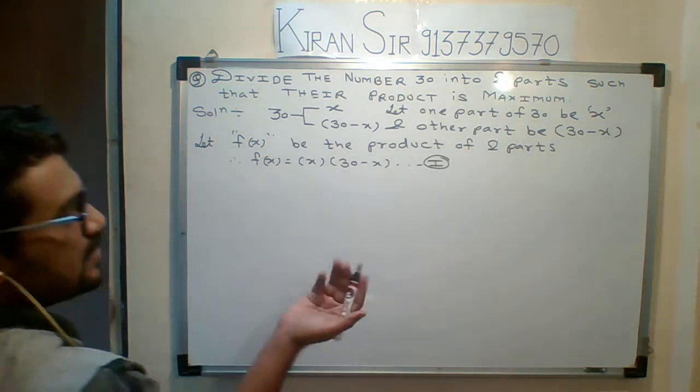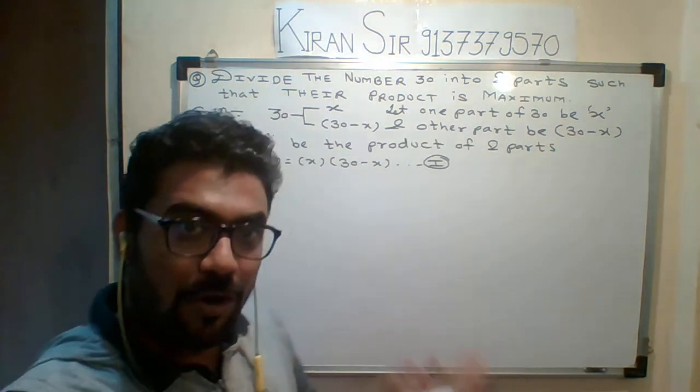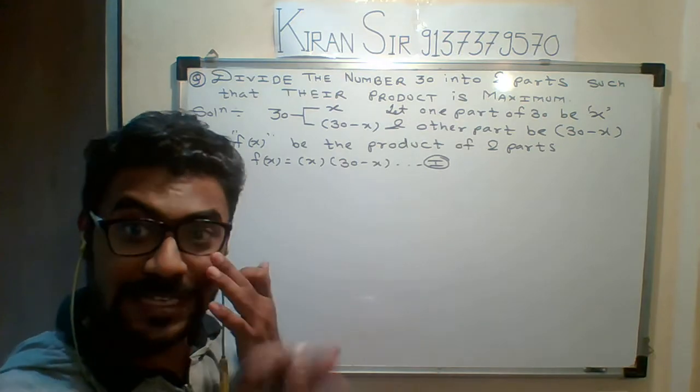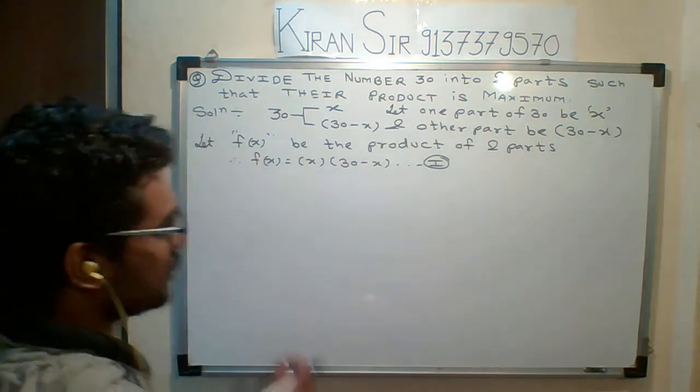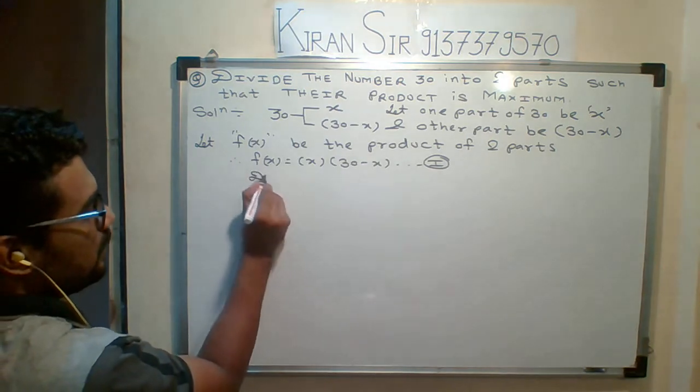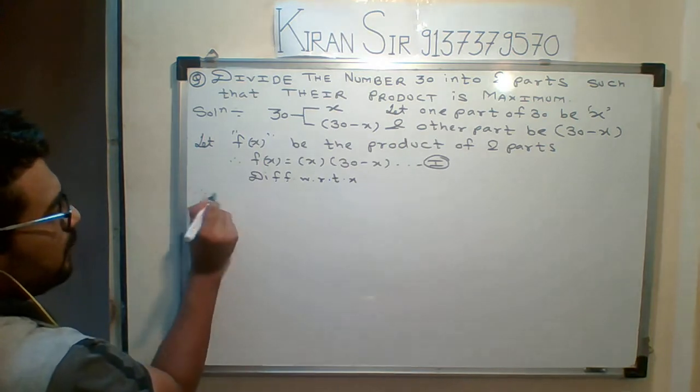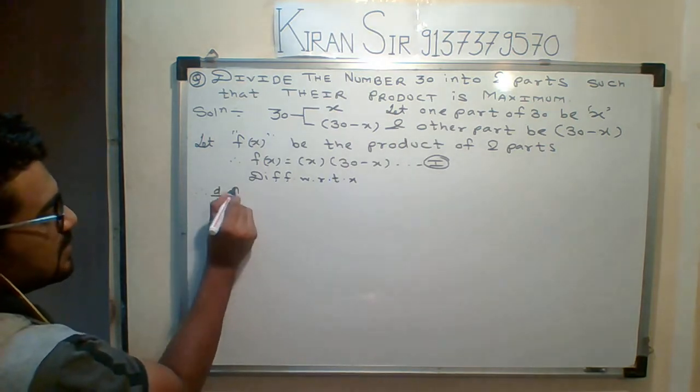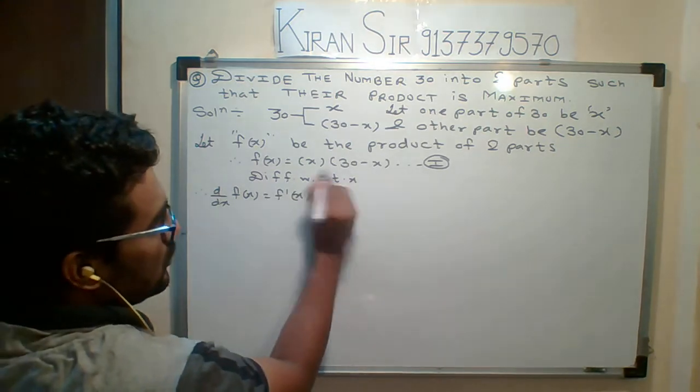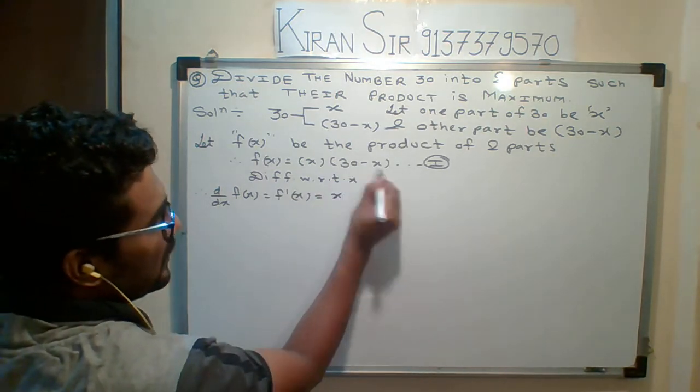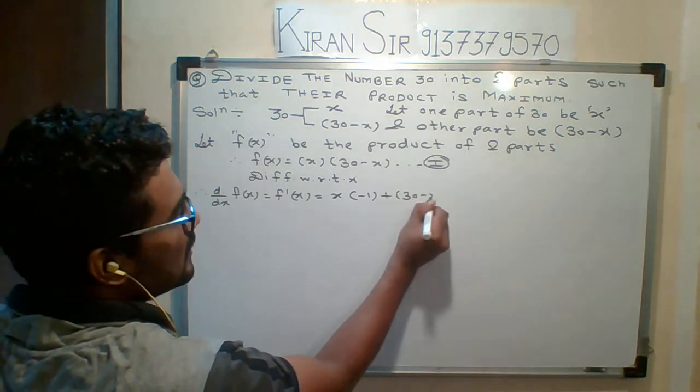Now what I will do, I will start differentiating, because f(x), as we did in the last lecture of maximum minimum, if you have a function then we will start differentiation. The derivative of 30 minus x is minus 1, plus 30 minus x, and derivative of x is 1.